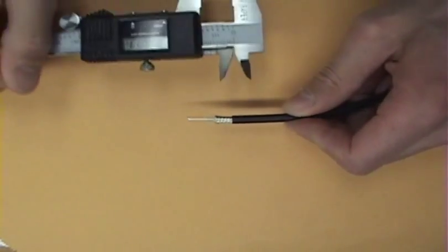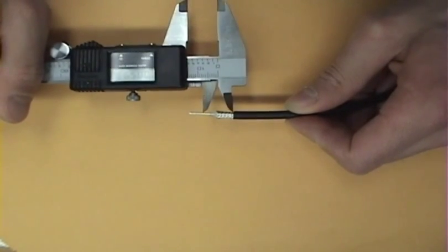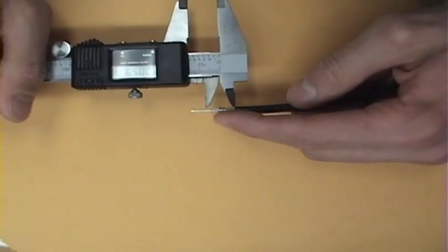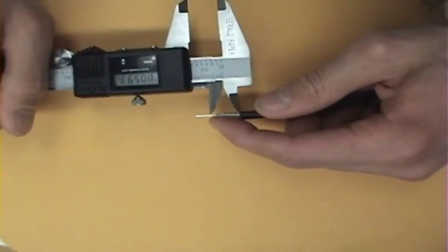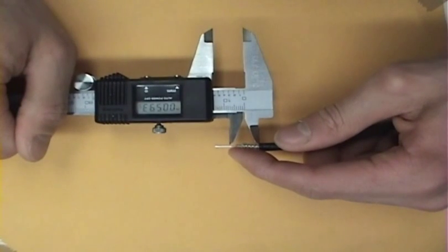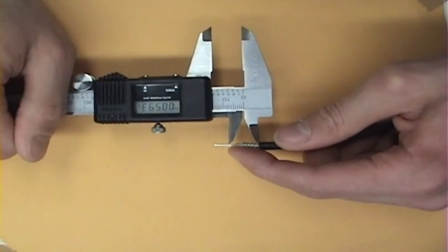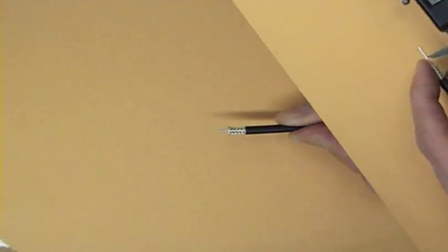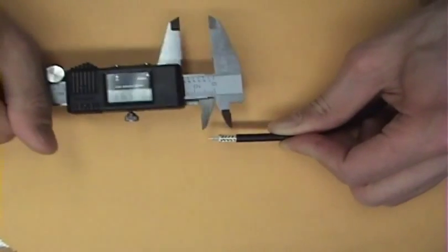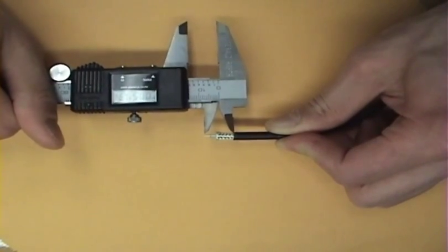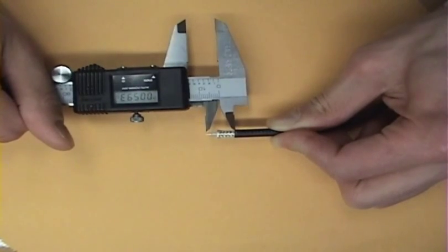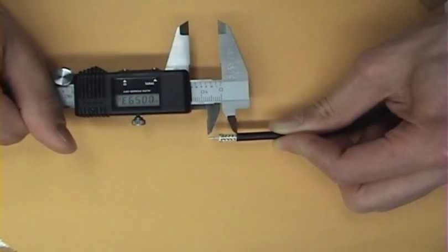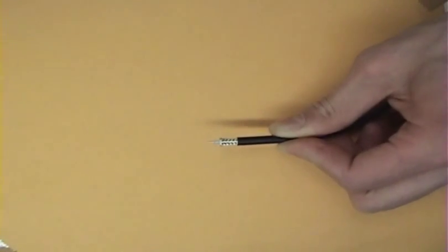I then set my vernier calipers to 0.593 inches to determine where I am going to cut the center conductor. Once the cut is made, I double check my measurement. And once I am happy with the measurement,